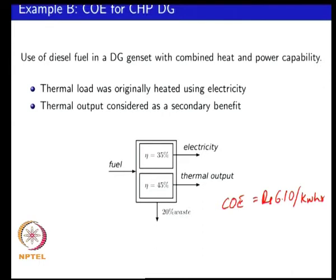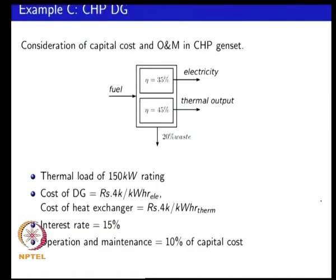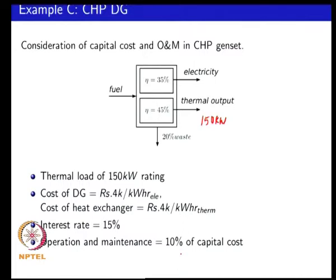But we have neglected the capital cost and equipment cost — there is a cost in the internal combustion engine, the alternator, the heat exchangers, the control system etcetera. So we will look at an example where we are looking at the capital and operation and maintenance cost. In this example we are given the thermal load is 150 kilowatt thermal and the cost of your electrical part of your DG system is 4000 rupees per kilowatt rating of the system. The cost of the heat exchanger part is also 4000 rupees per kilowatt thermal and we are assuming an interest rate of 15 percent, with operation and maintenance cost at 10 percent of your capital cost.